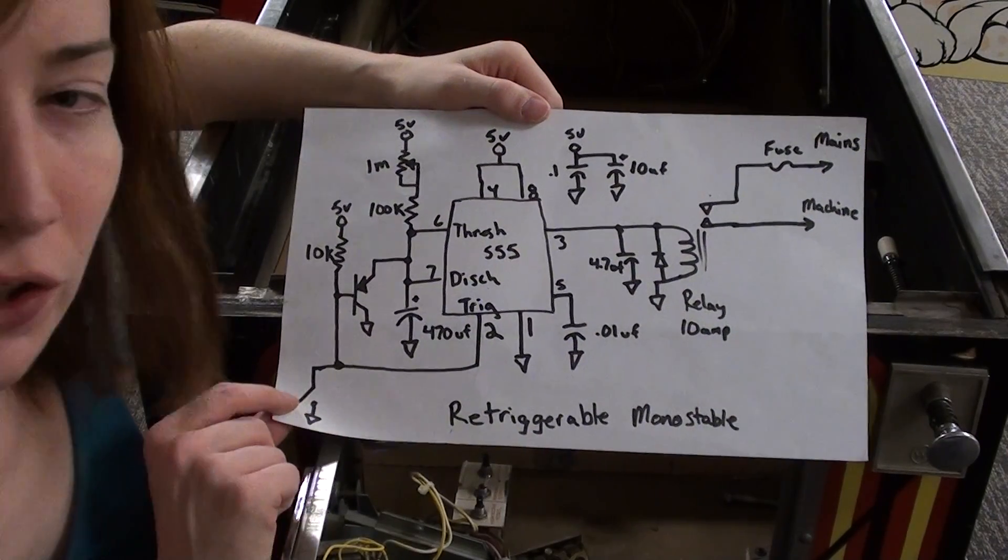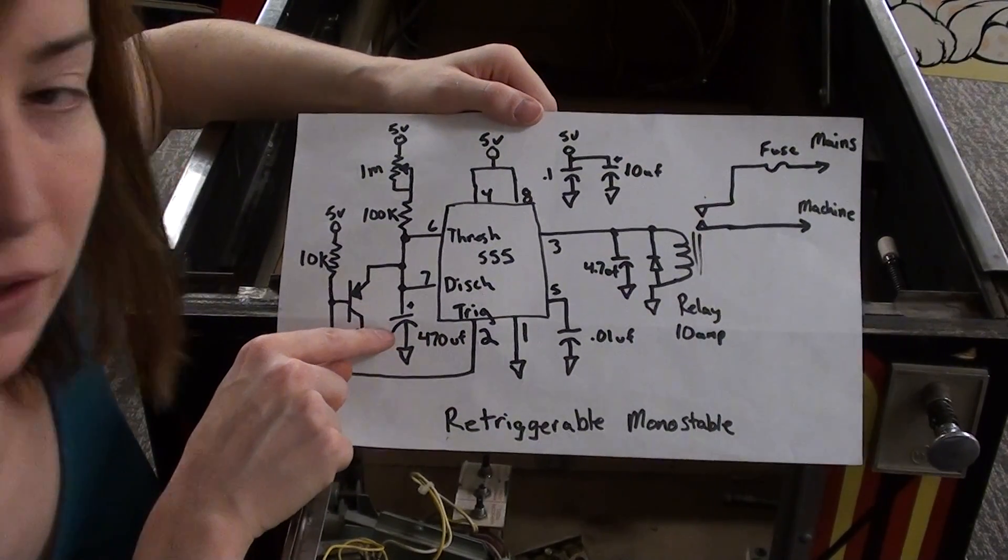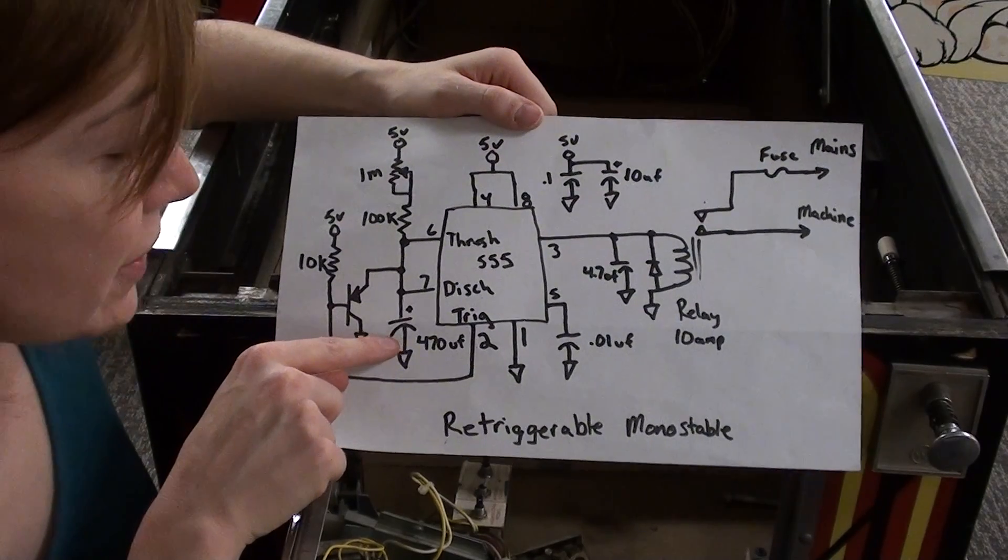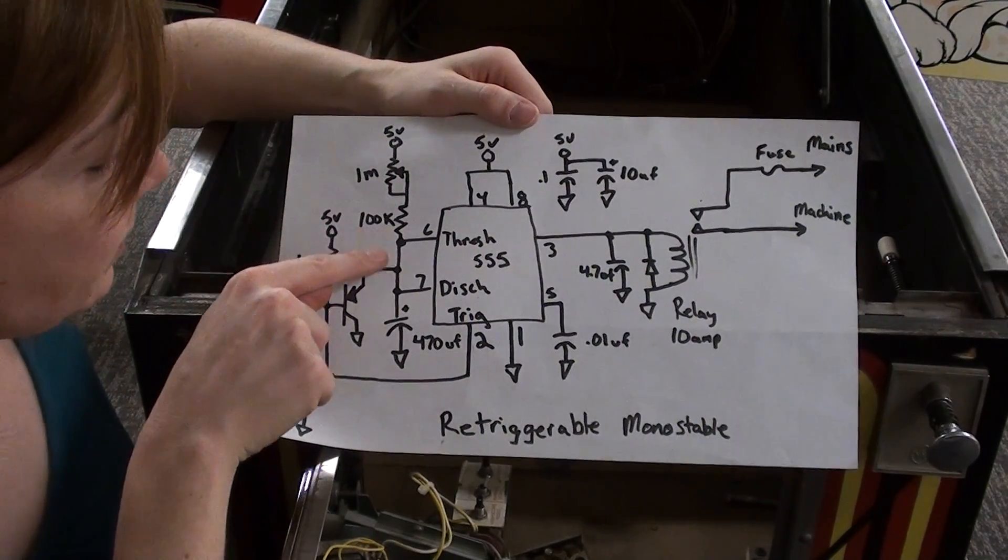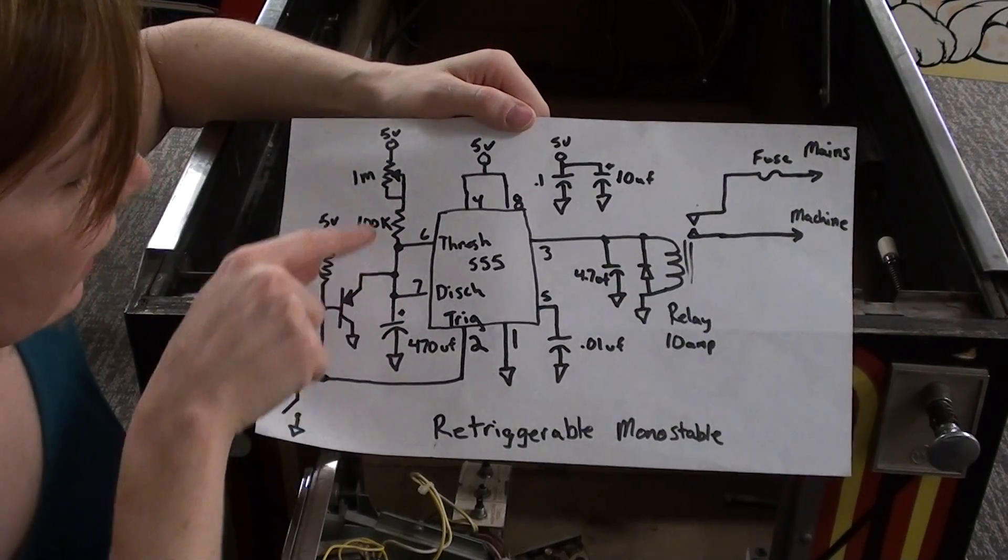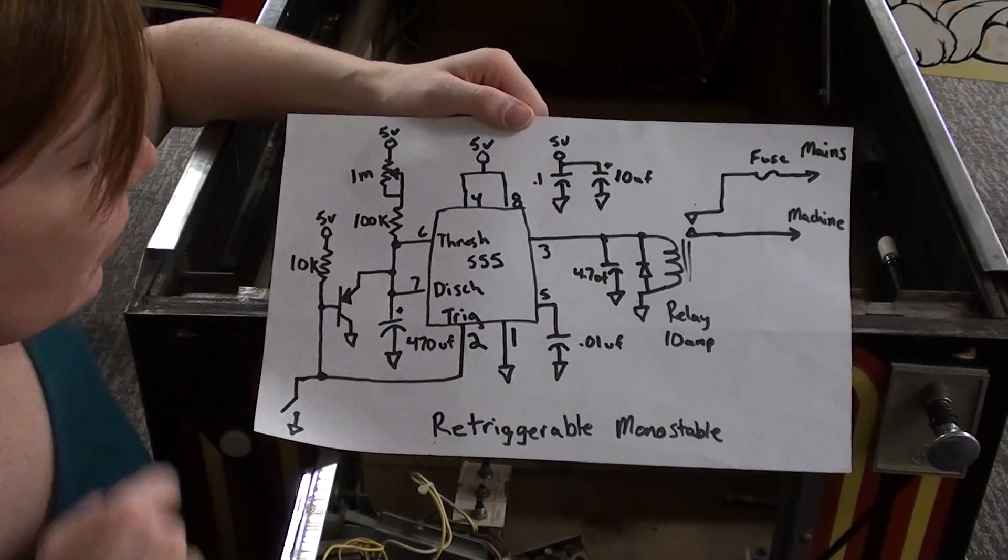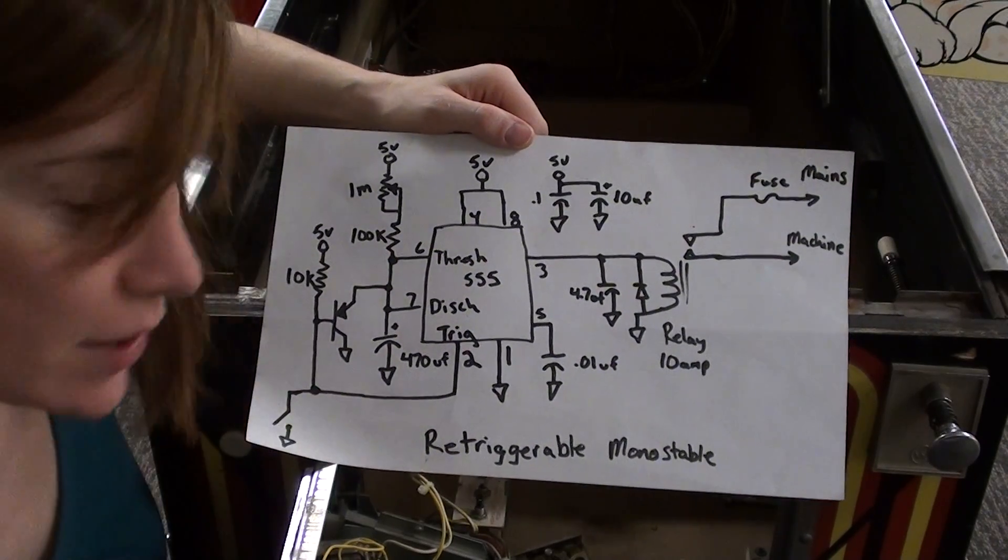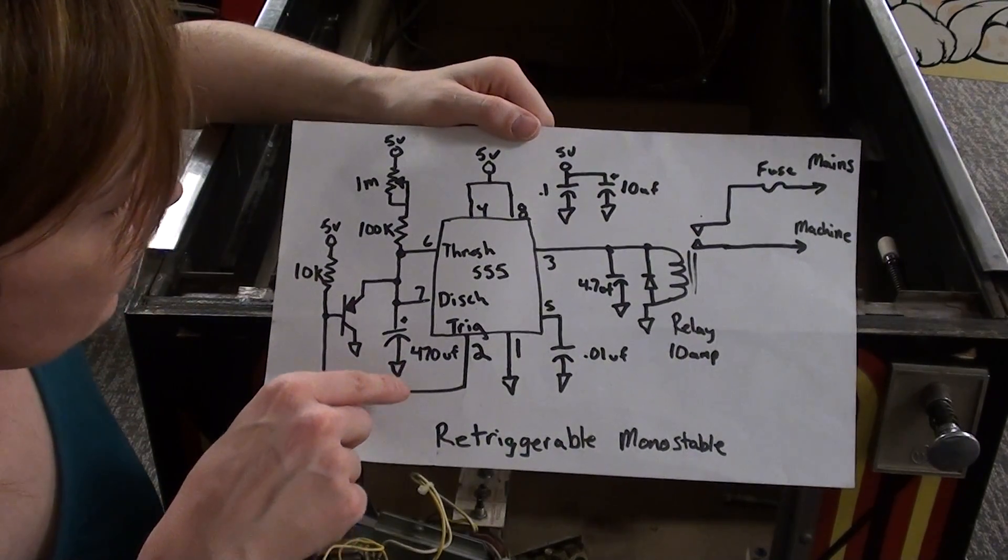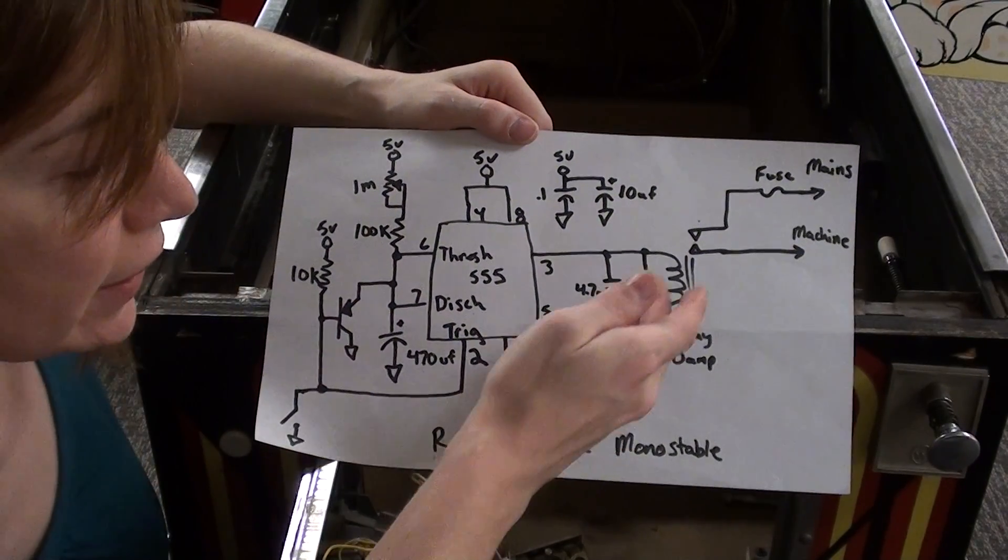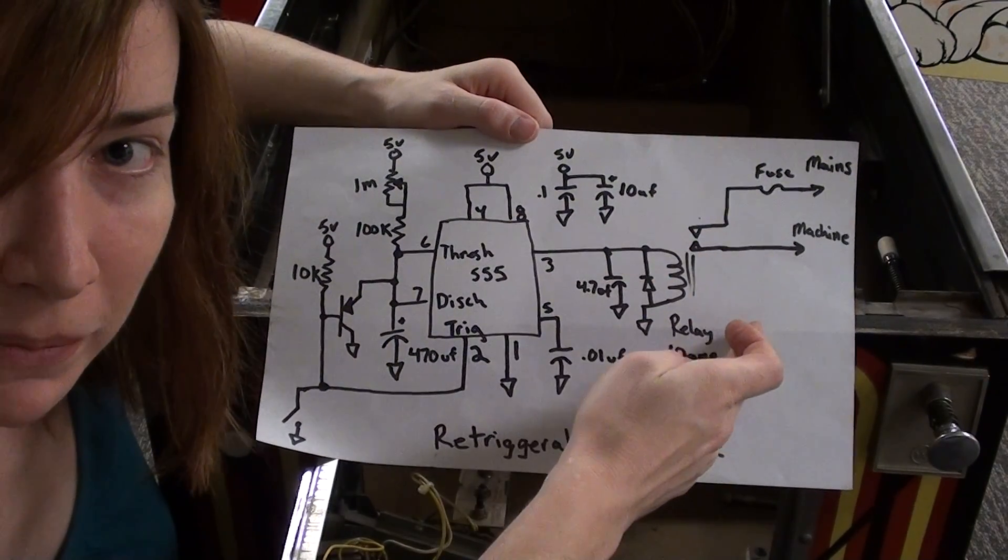So when the switch closes, what it does is it discharges a capacitor, which is a pretty large capacitor here, and it's slowly getting charged back up through a resistor network here with a 1 megaohm potentiometer so you can adjust the time that it takes to time out. And as it's charging up, it'll hit a threshold and eventually trip a relay that's cutting the mains power.